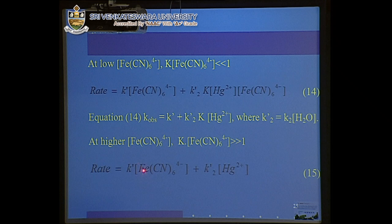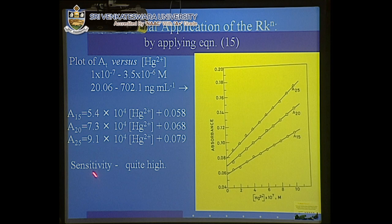When the concentration is much greater than 1, the rate will be directly related to the concentration of mercury, and calibration curves were prepared. The sensitivity is very high — after 15 minutes, 20 minutes, and 25 minutes measurement, a sensitivity of 5.4×10⁴ is achieved, quite high. Higher the slope, greater the sensitivity.